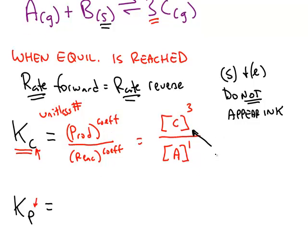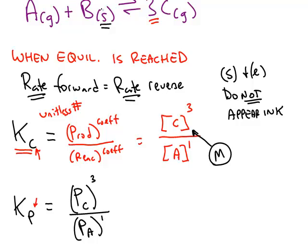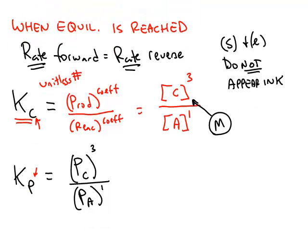Square brackets means we are using the unit molarity. If we were looking at Kp, we would have the same kind of fraction, but we would have the pressure of chemical C raised to the third power divided by the pressure of gas A raised to the first. Again, B is a solid, so it does not appear in K. The units for pressure will be the standard unit of bar. Sometimes you will see atmospheres, but technically the correct unit should be bar.